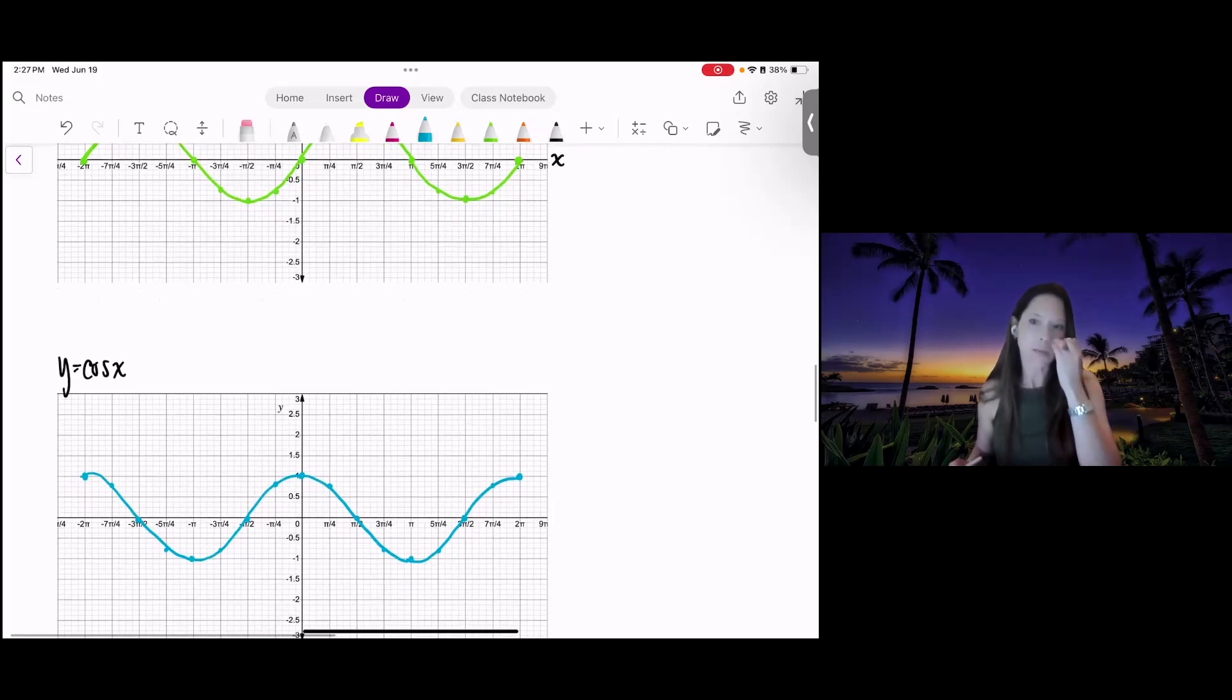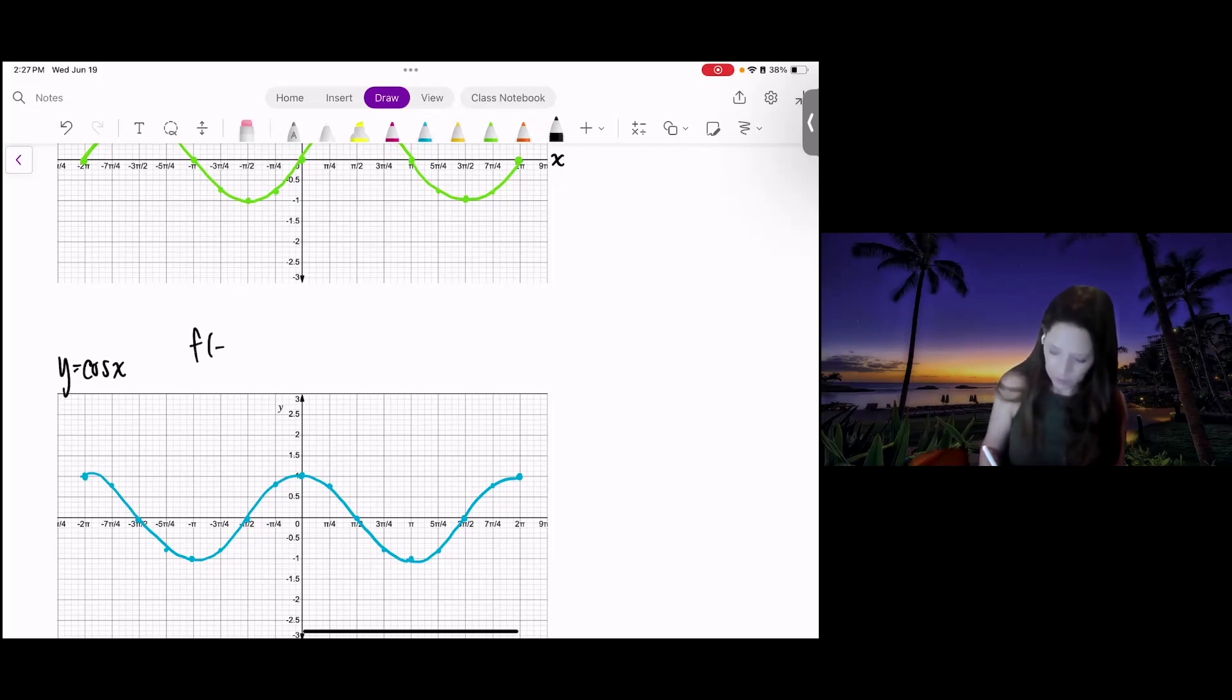The cosine function is an even function. It is symmetric about the y-axis, which means that the right-hand side and the left-hand side, if you folded the paper, would match. An even function is when, if you plug in a negative into the function, you get back the same function.